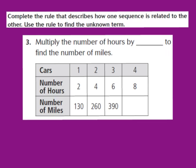Now let's take a look at question number 3. Our job is to complete the rule that describes how one sequence is related to the other, and use that rule to find the unknown term. Question 3 says: multiply the number of hours by blank. We have to figure out what the rule is to find the number of miles. Looking at the table: the first row represents the number of hours, and the second row represents the number of miles.